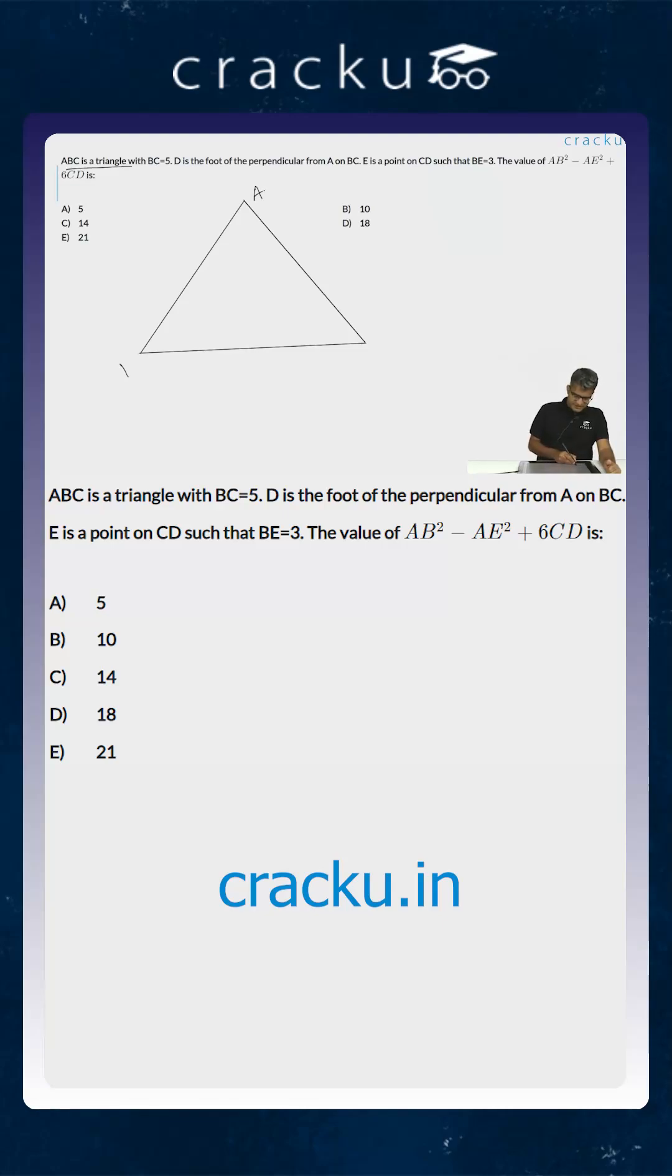This is A, this is B and this is C. We are drawing a perpendicular from A to BC. Let us assume that this is D. The length of BC is 5.